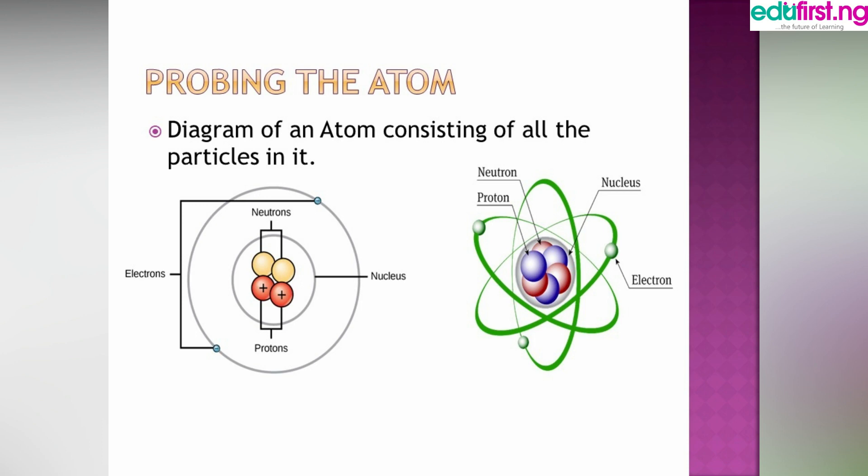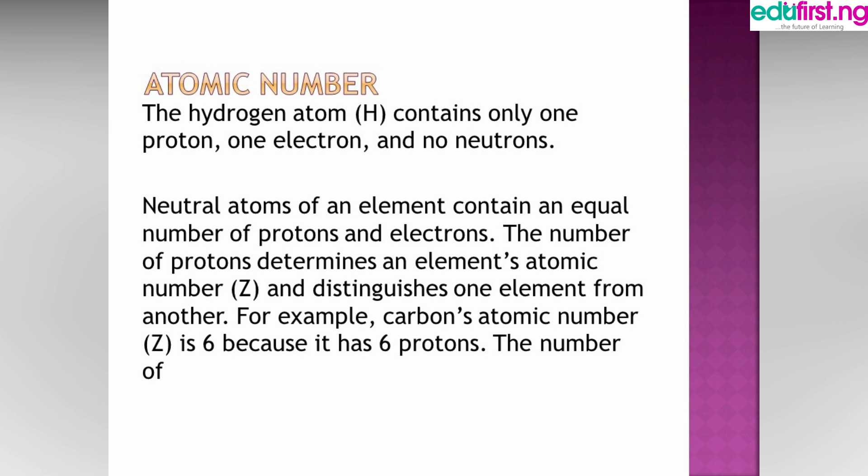Atomic number: we know the periodic table, hydrogen is number one. It is not just placed as number one in the periodic table. It's because it has only one proton, and proton is equal to electron.